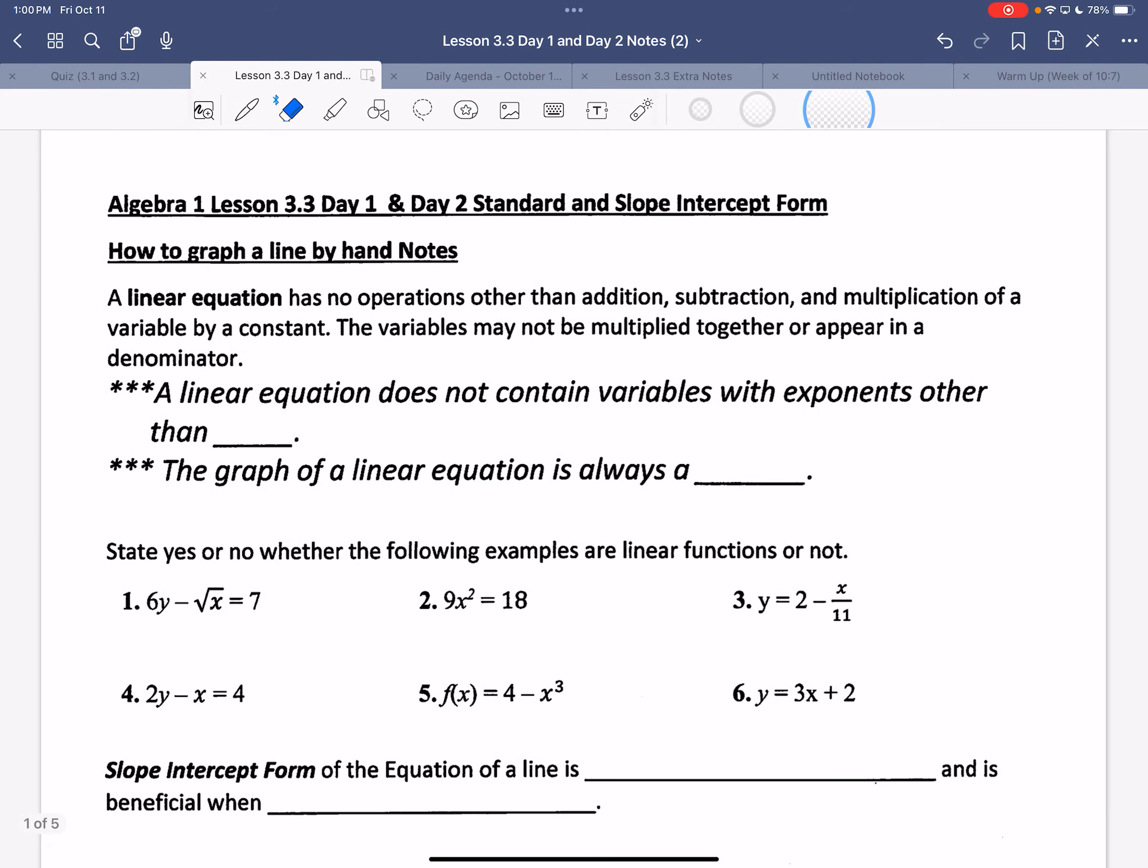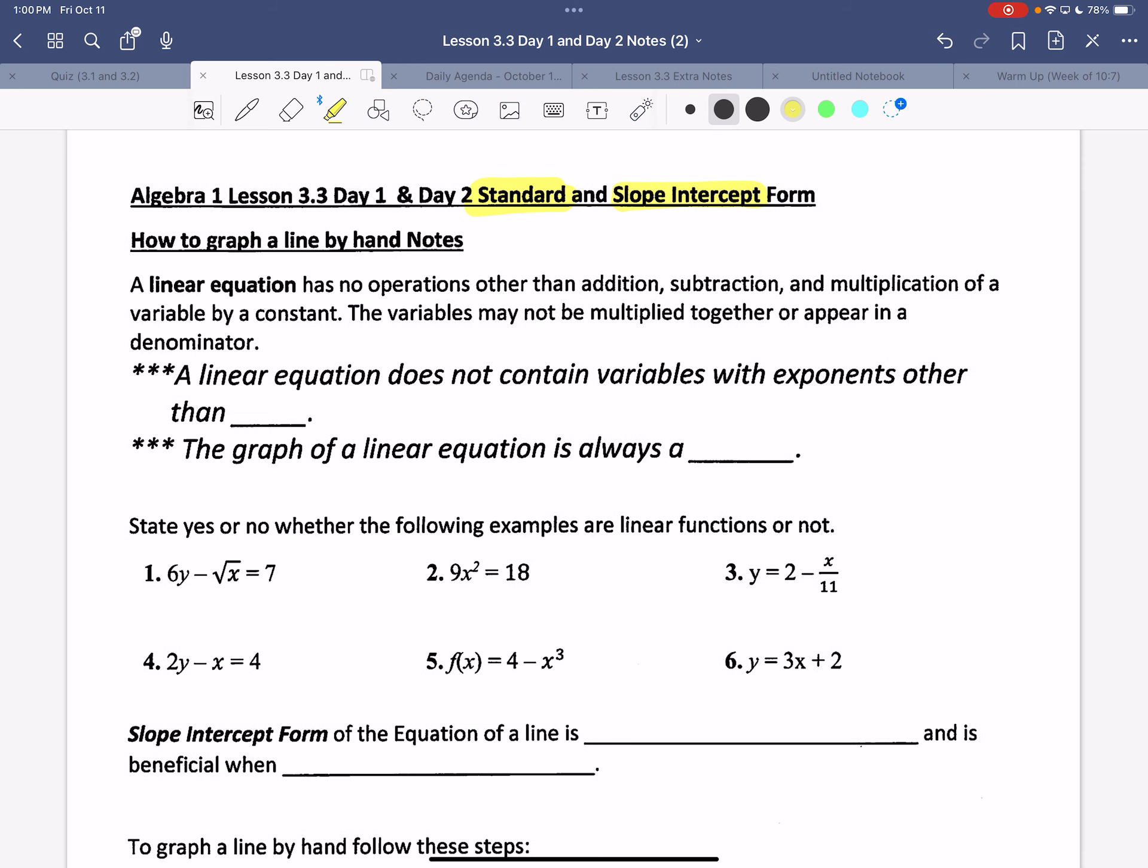We are going to start today. We're switching to lesson 3.3. We're going to do this today as well as next week. So there's not going to be homework today. Long weekends, so there's no reason to have homework. What we're doing is we're going from standard and slope intercept form to graphing. So today we're going to focus on slope intercept form.